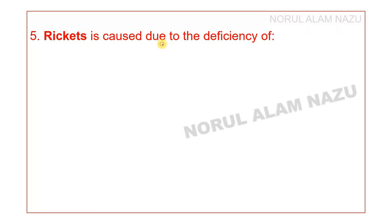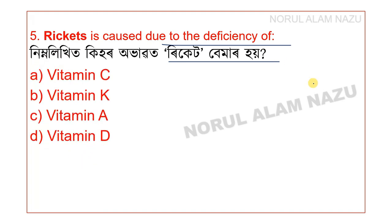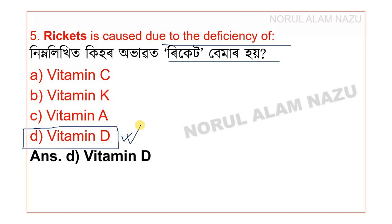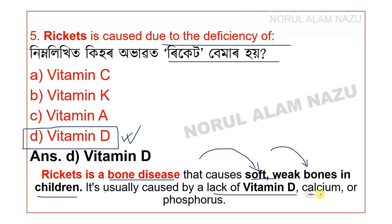Rickets is caused due to the deficiency of which vitamin? The answer is Vitamin D. It is usually caused by lack of Vitamin D, calcium, and phosphorus.